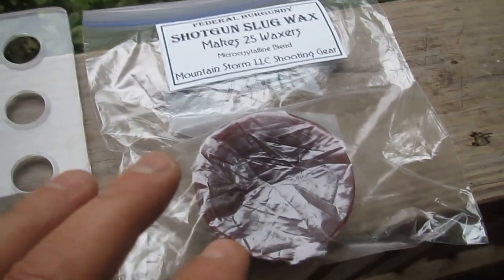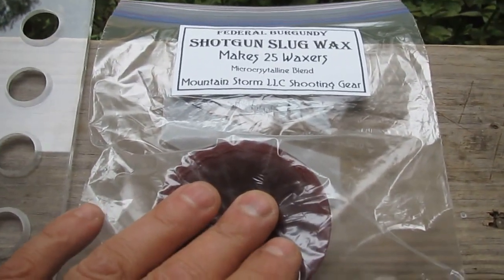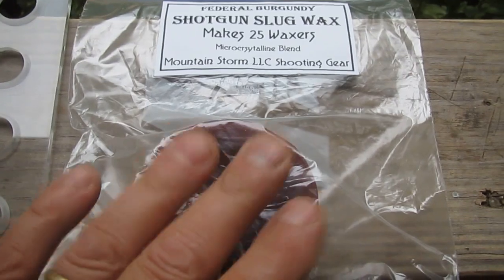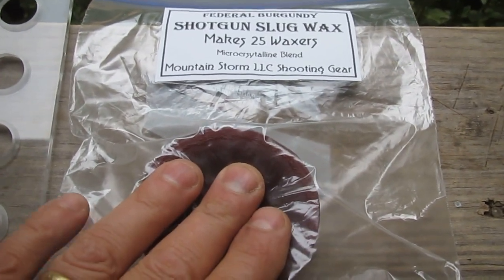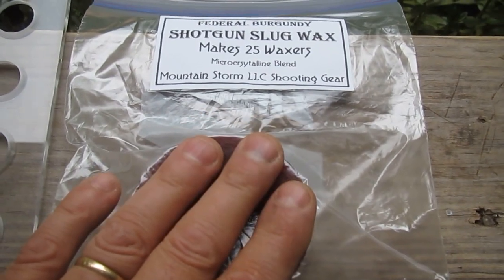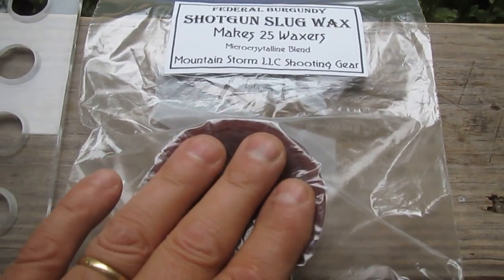And you get a puck, a Federal Burgundy Shotgun Slug Wax, which makes 25 rounds. It's a special microcrystalline paraffin blend. It's stronger and stickier than candle wax or crayon wax.